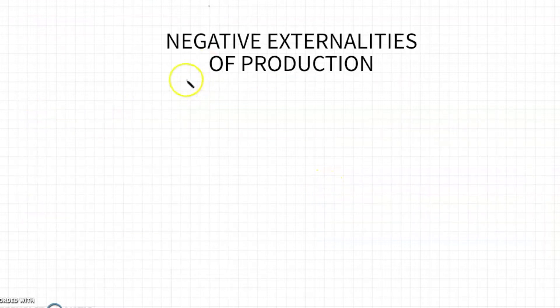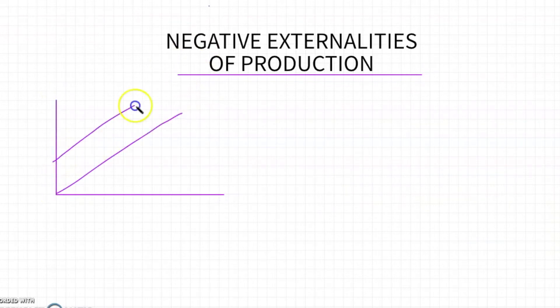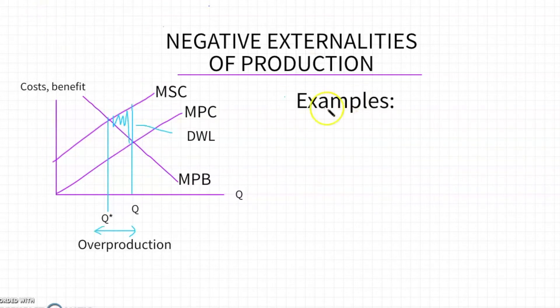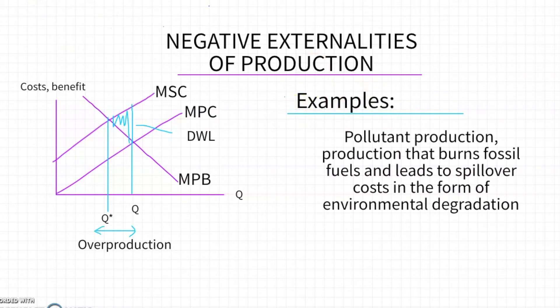So far we've been talking about negative consumption externalities. In this case, we're going to talk about negative externalities of production, when the production of a good or service actually results in negative spillover costs to third parties. Unlike a consumption externality, the divergence here between the curves is between MSC and MPC. The difference is between the marginal private cost, the cost to the individual producer of producing the good, and the marginal social cost. In this case, the cost to society of the producer producing this good is higher because of, for example, pollution, contamination of nearby water sources, etc. That creates a deadweight loss and an overproduction of the good relative to the socially optimal level.